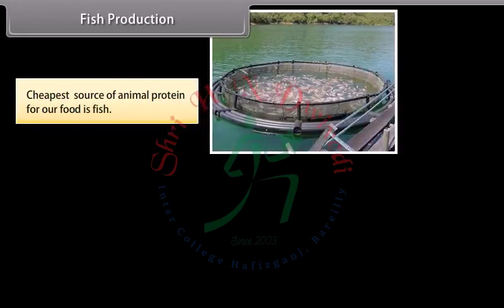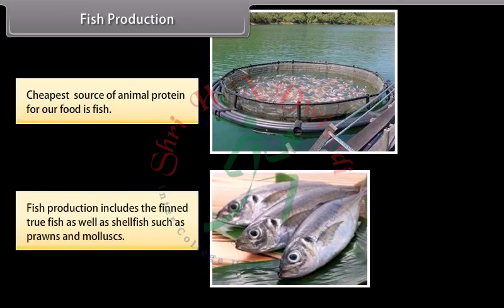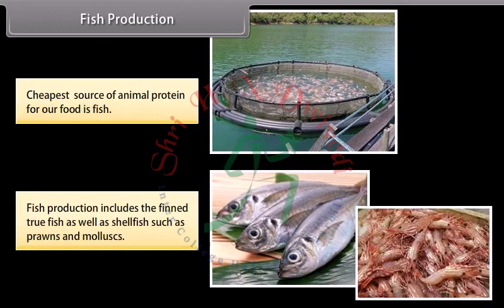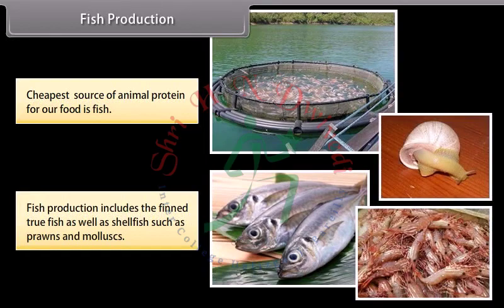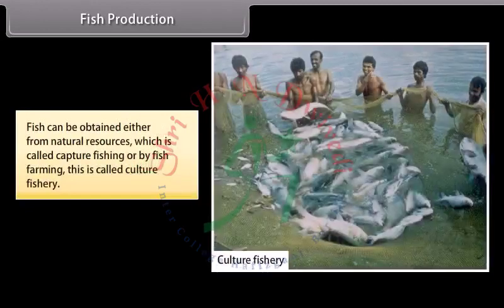Fish is the cheapest source of animal protein in our food. Fish production includes true fish as well as shellfish such as prawns and mollusks. Fish can be obtained either from natural resources, which is called capture fishing, or by fish farming, which is called culture fishery.